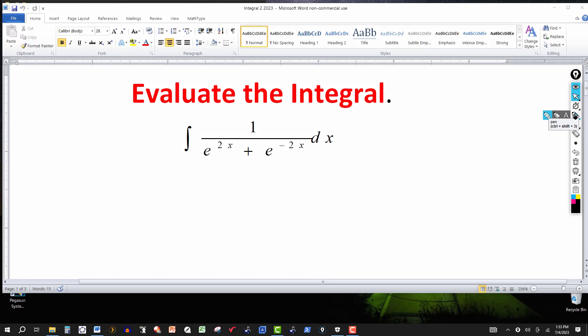For this one I'm going to use a u substitution, but first I'm going to multiply the numerator and denominator by e to the 2x. If you have another method that works fine, post it in the comments please.